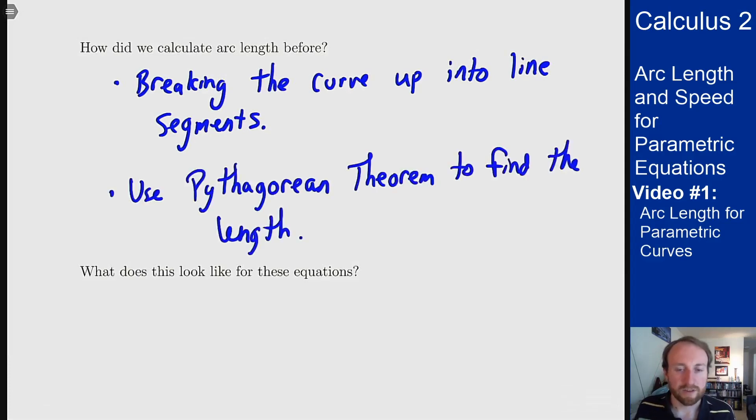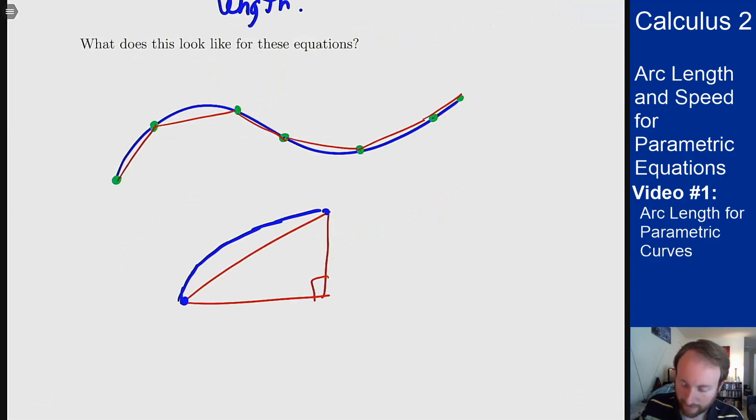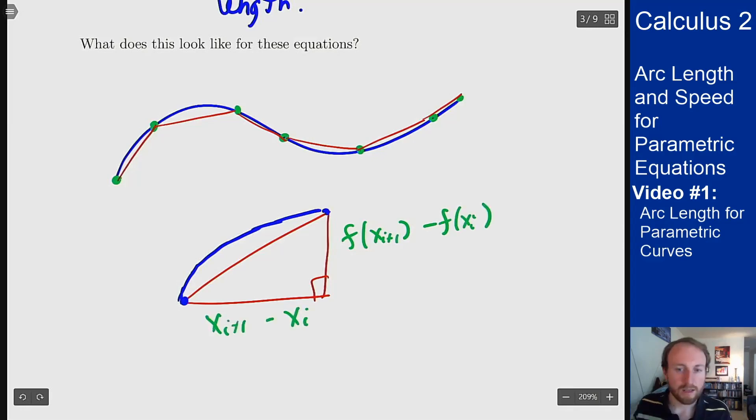Now what does that sort of thing look like for this equation? We're going to have the same sort of thing where we're going to break the curve up into little line segments and then use a right triangle to find the length. So that's my curve that I broke up into pieces. I get these straight line segments here and I can extract one of these and use a right triangle to find its length. Now what we had last time was the fact that the vertical side was f at x_{i+1} minus f at x_i and the horizontal side was just x_{i+1} minus x_i.